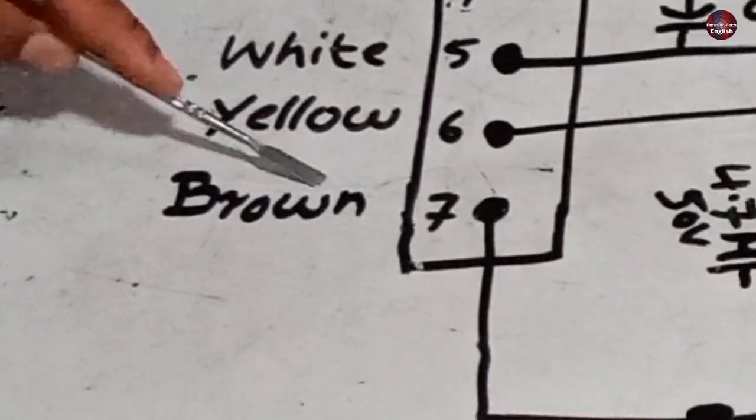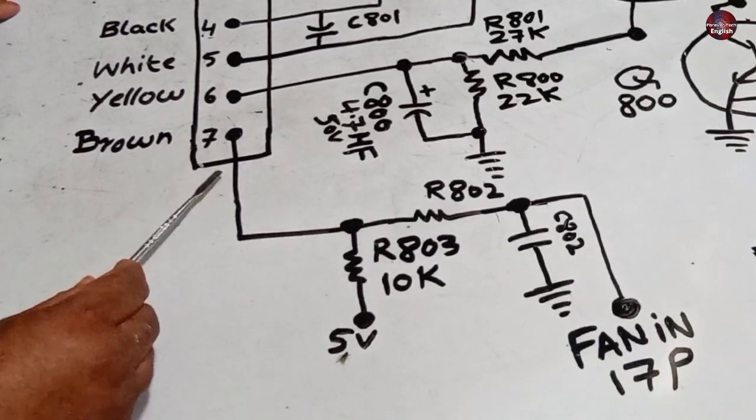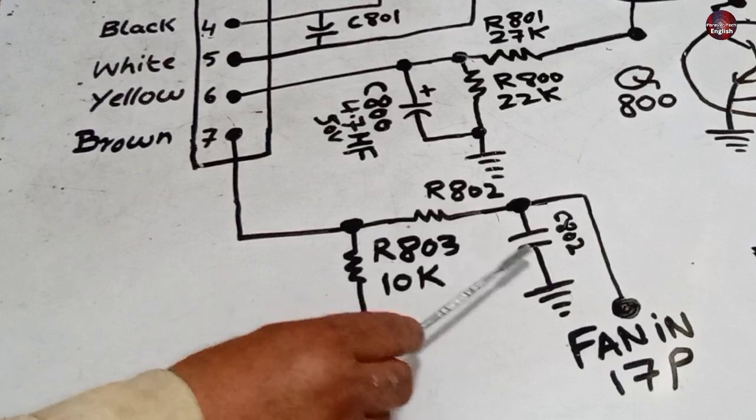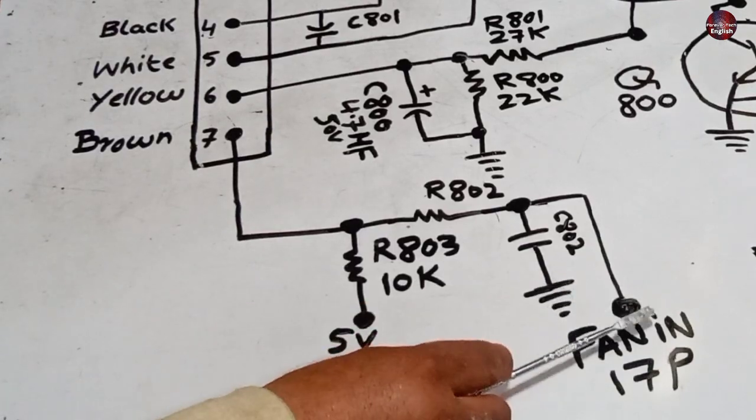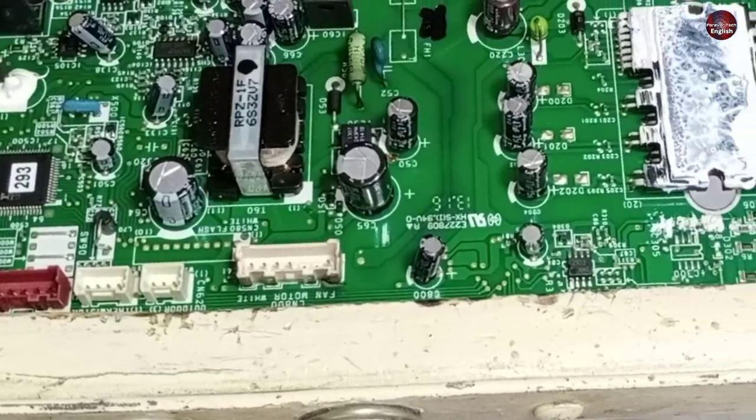The next is the brown and the 7 number pin of the fan connector. The motor feedback is generated from this pin, which enters the fan in at the microcontroller pin number 17, and this is how the function is completed. And now, I will check the voltages properly to check what the situation is in this PCB.